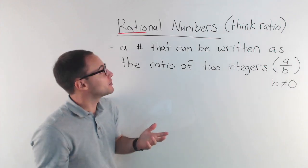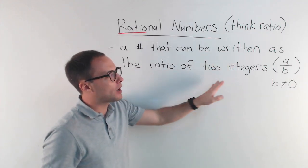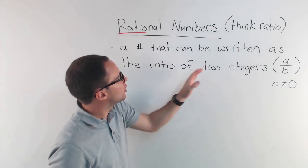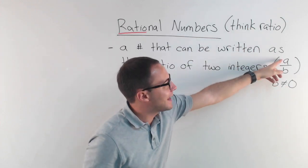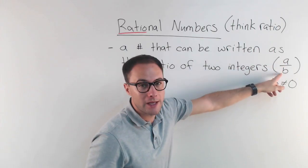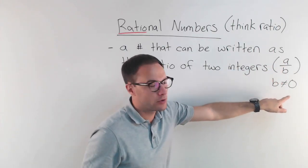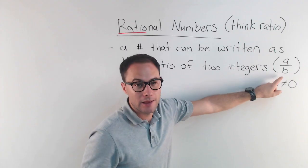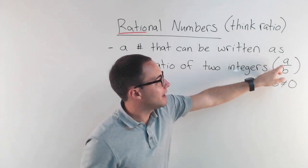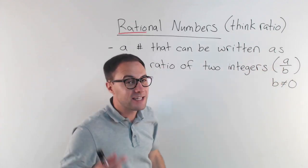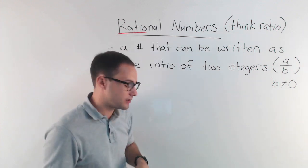Rational numbers are just numbers that can be written as the ratio of two integers. A ratio we can write like a fraction — a to b can be written as a over b, as long as b is not zero. Because if b is zero, that's undefined. So as long as a and b are integers, you've got rational numbers.